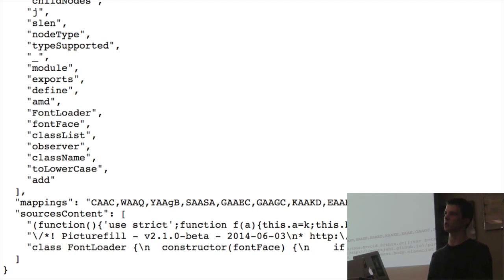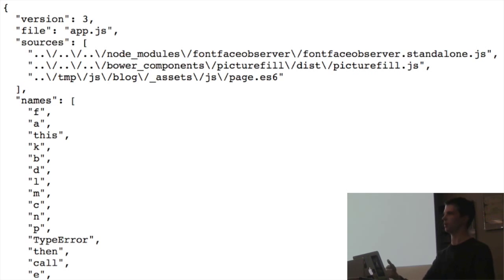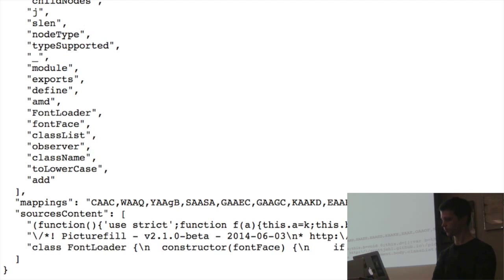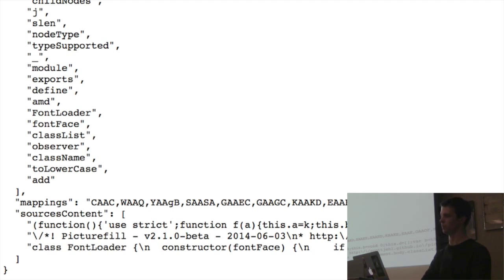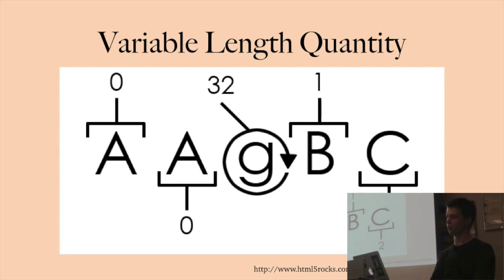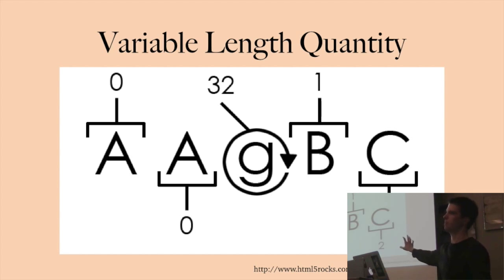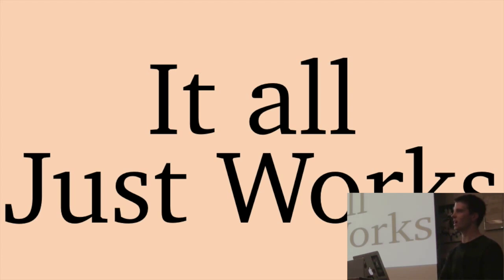Finally you have sourcesContent — the original source for each of those sources. So instead of sending both the minified version and all your source files separately, all your source files are now bundled in here, and you only have to deploy two files to production. The mappings field is where all the magic happens — the bidirectional mapping. It uses these five-digit sets of letters encoded with Variable Length Quantity, the same algorithm used to generate MIDI files. I can't fully explain it, but the important part is it all just works.